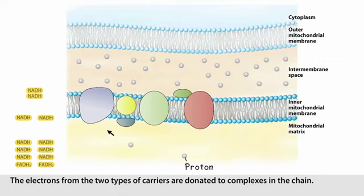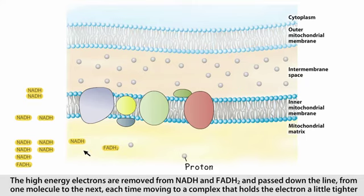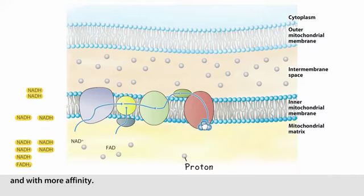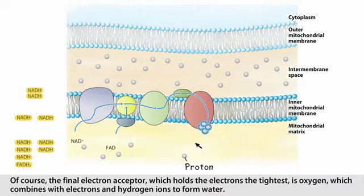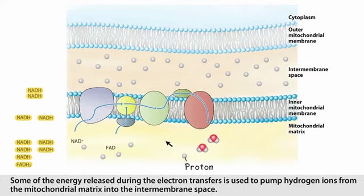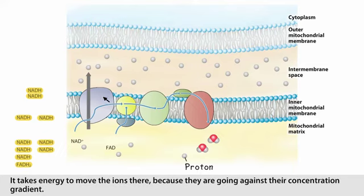The electrons from the two types of carriers are donated to complexes in the chain. The high-energy electrons are removed from NADH and FADH2 and passed down the line, from one molecule to the next, each time moving to a complex that holds the electron a little tighter and with more affinity. The final electron acceptor, which holds the electrons the tightest, is oxygen, which combines with electrons and hydrogen ions to form water. Some of the energy released during the electron transfers is used to pump hydrogen ions from the mitochondrial matrix into the intermembrane space.